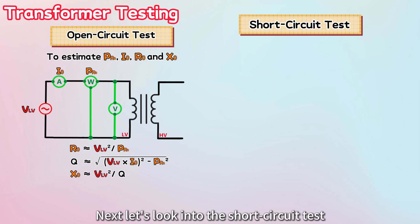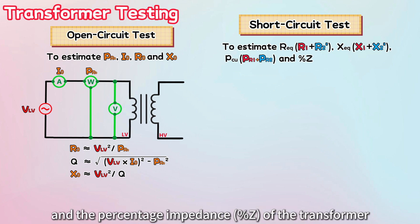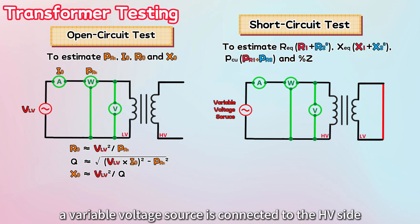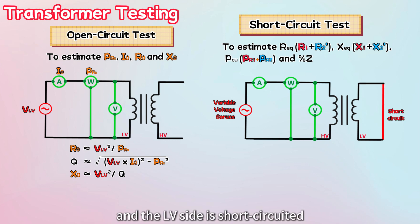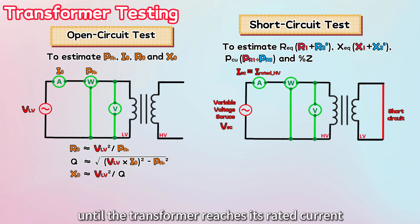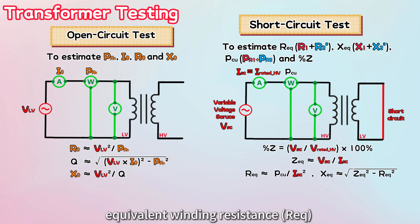Next, let's look into the short-circuit test. A short-circuit test is performed to determine the equivalent winding resistance, equivalent leakage reactance, copper loss, and the percentage impedance of the transformer. For this test, a variable voltage source is connected to the HV side, and the LV side is short-circuited. Now, we gradually increase the supply voltage from zero until the transformer reaches its rated current. The voltage required to reach this current can be used to calculate the percentage impedance, which is crucial for fault analysis. The wattmeter reading during this test corresponds to the copper loss. Subsequently, we can approximate the equivalent winding resistance and leakage reactance using the appropriate formulas.